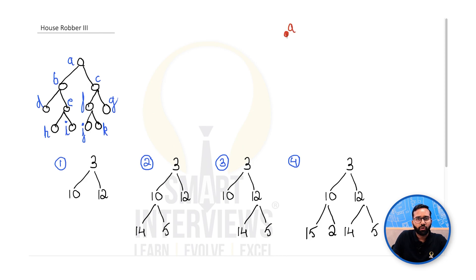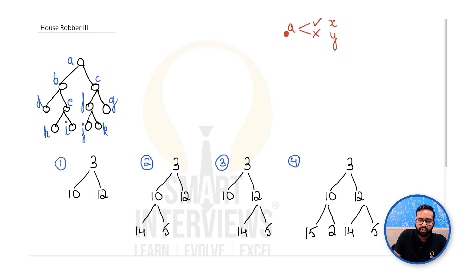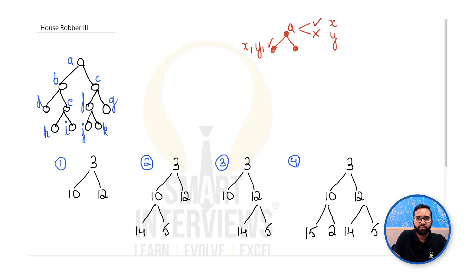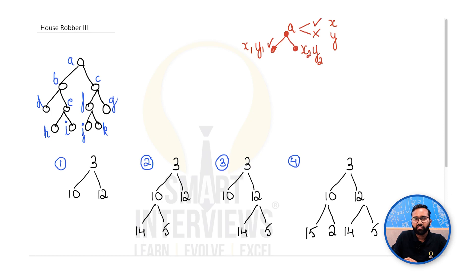For any node, there are only two options: either you take the node or you skip it. Say the answer obtained by taking the node is x, and by not taking it is y. These answers depend on the child nodes. For each child, we define x1/y1 (take/skip for left child) and x2/y2 (take/skip for right child). If for every node we can find these x and y values, we can find our answer — since the final answer either includes or excludes the root.